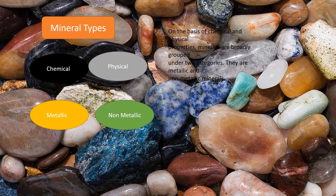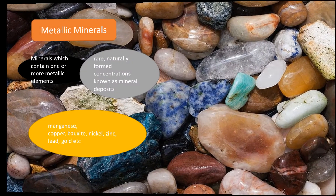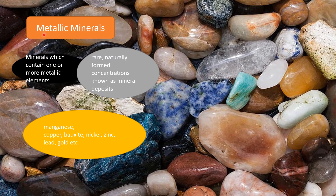Looking at mineral types — based on physical and chemical properties, we can divide them into metallic and non-metallic minerals. Metallic minerals contain one or more metallic elements. Examples include manganese, copper, bauxite, nickel, zinc, lead, and gold.